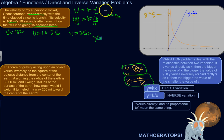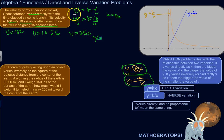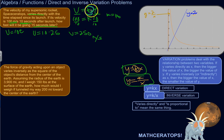So the steps are: first, figure out what kind of variation is occurring — direct, inverse, joint, or combined. Then, based on the type, set up the general form of the equation. Use the specific information given to figure out the constant k that shapes the relationship, then use that equation to solve other questions.